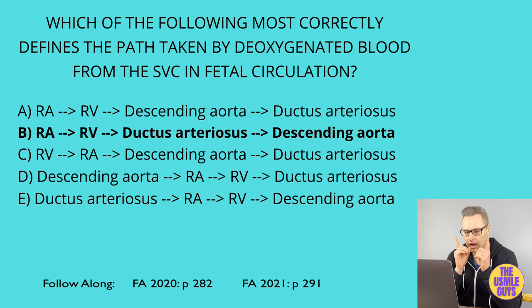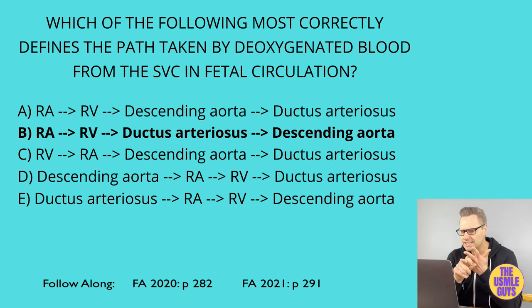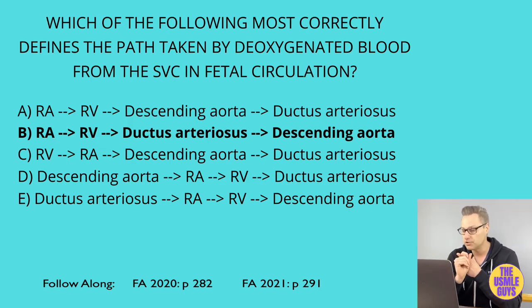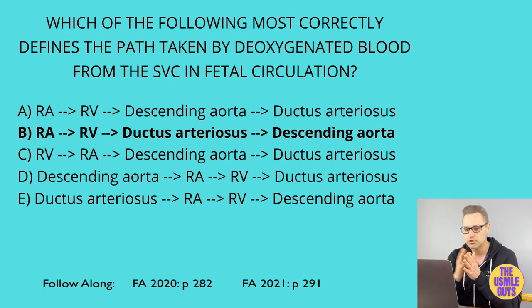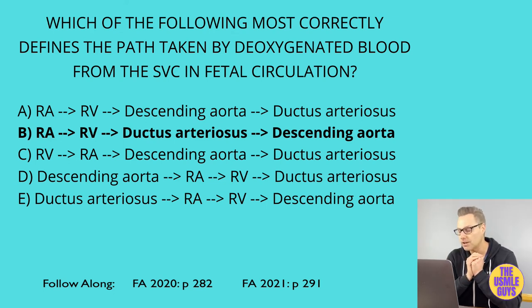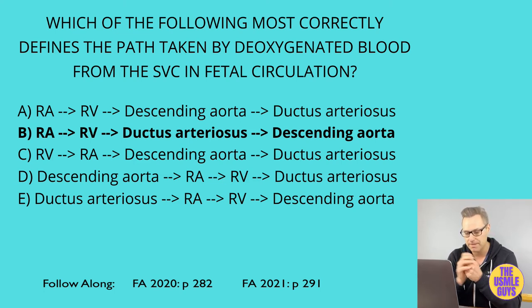There are three shunts in fetal circulation we need to know. First, hepatic circulation is bypassed as blood enters the fetus through the umbilical vein and moves into the IVC via the ductus venosus. Most of the oxygenated blood that reaches the heart through the IVC moves through the foramen ovale into the left atrium. The final shunt results from high fetal pulmonary artery resistance due to low oxygen tension — deoxygenated blood from the superior vena cava travels to the descending aorta via the right atrium, right ventricle, main pulmonary artery, and ductus arteriosus.